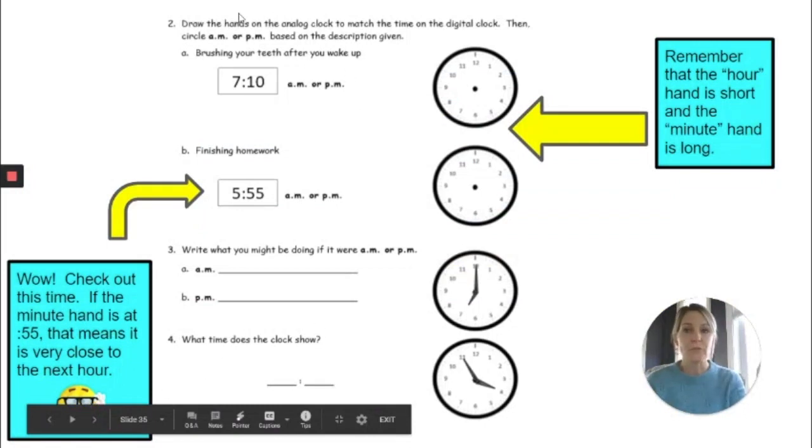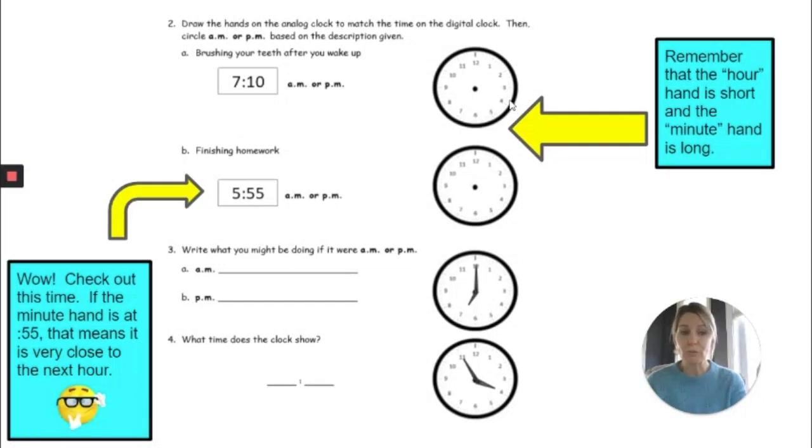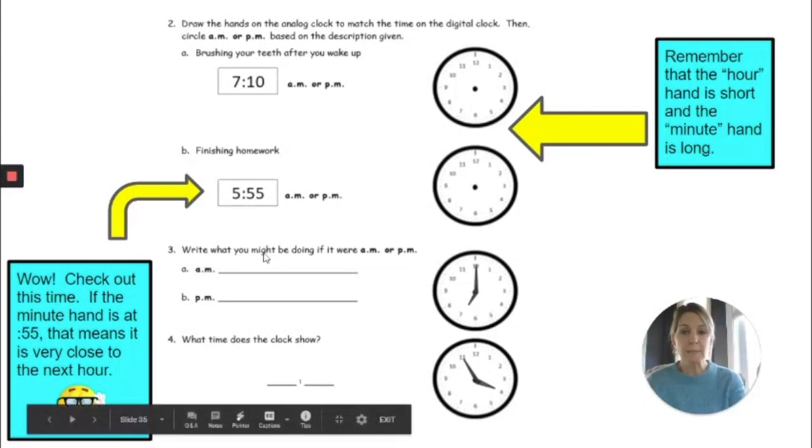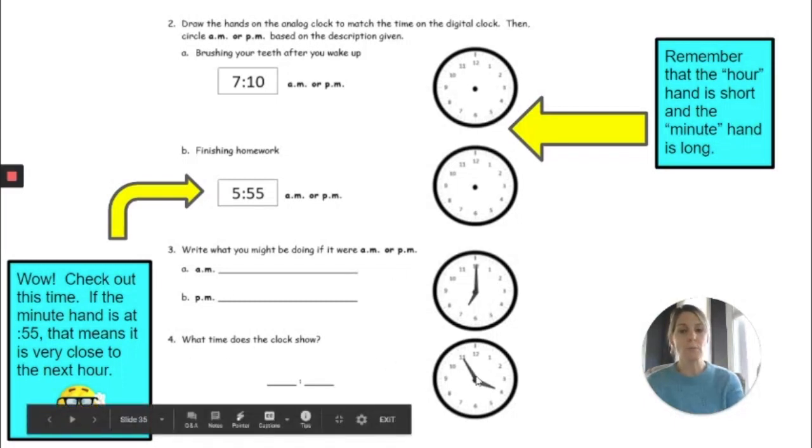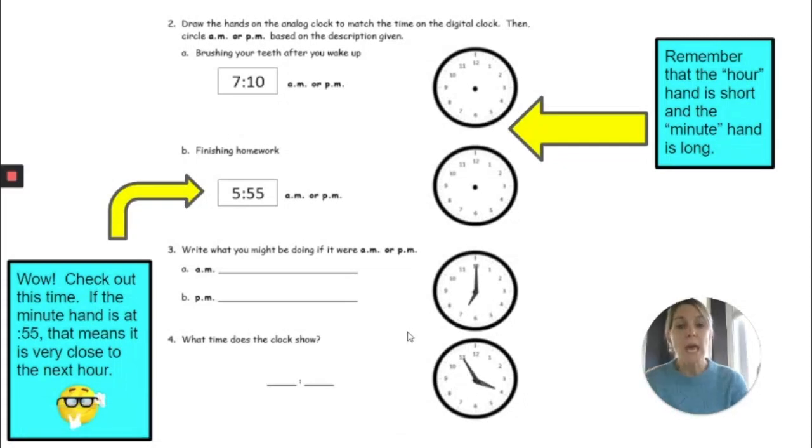Your practice set today for the first part, you're going to draw the hands on the clocks. I did put a few reminders in here. Remember that the hour hand is short and the minute hand is long. And also, if you look at B, which is what we're saying is time to be finishing your homework, is 5:55. If the minute hand is at 55, that means it's very close to the next hour. So think about that when you're drawing the hands. For the next part, you need to write what you might be doing at this time if it were AM or at this time if it were PM. And for the last part, you are writing what time is shown on the clock. So if you have a pencil and paper handy, use that. If not, you can answer the questions in your head. Now you can pause the video to complete your practice set.